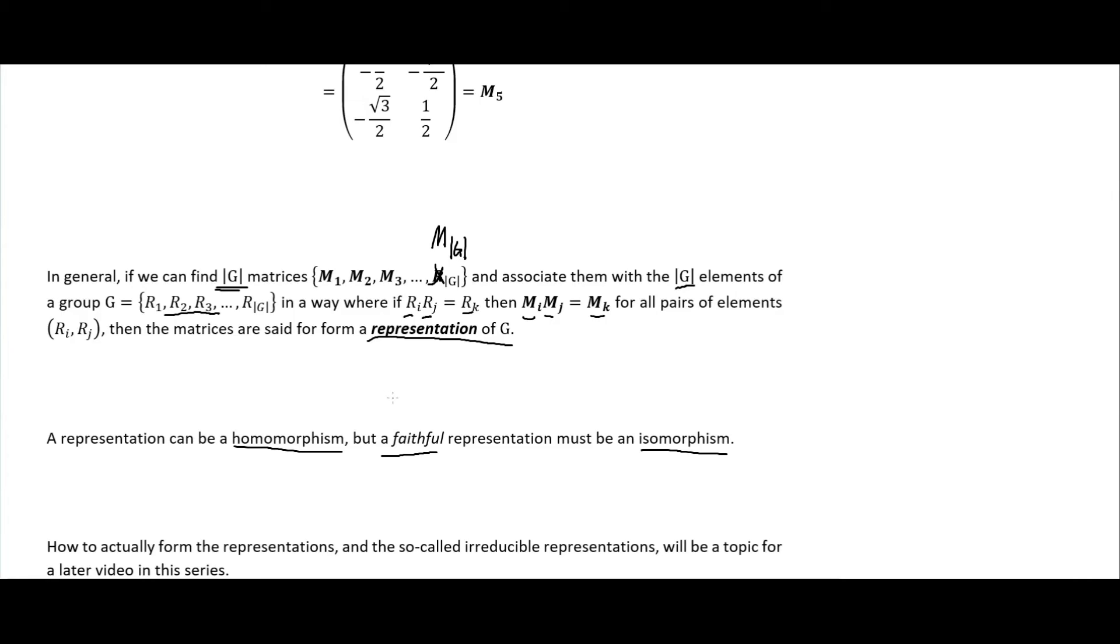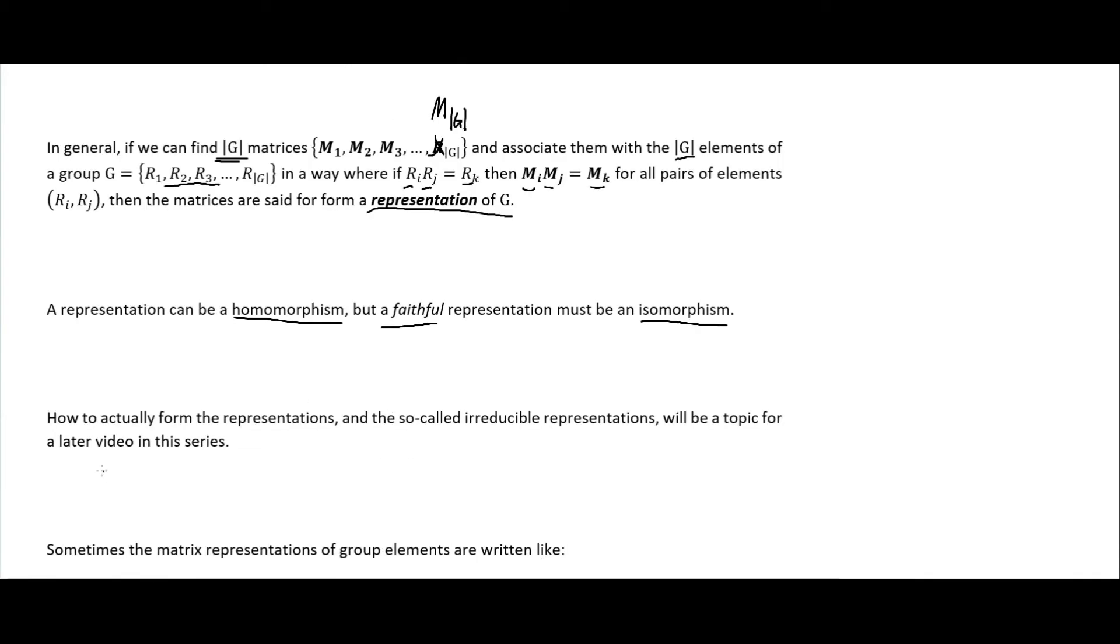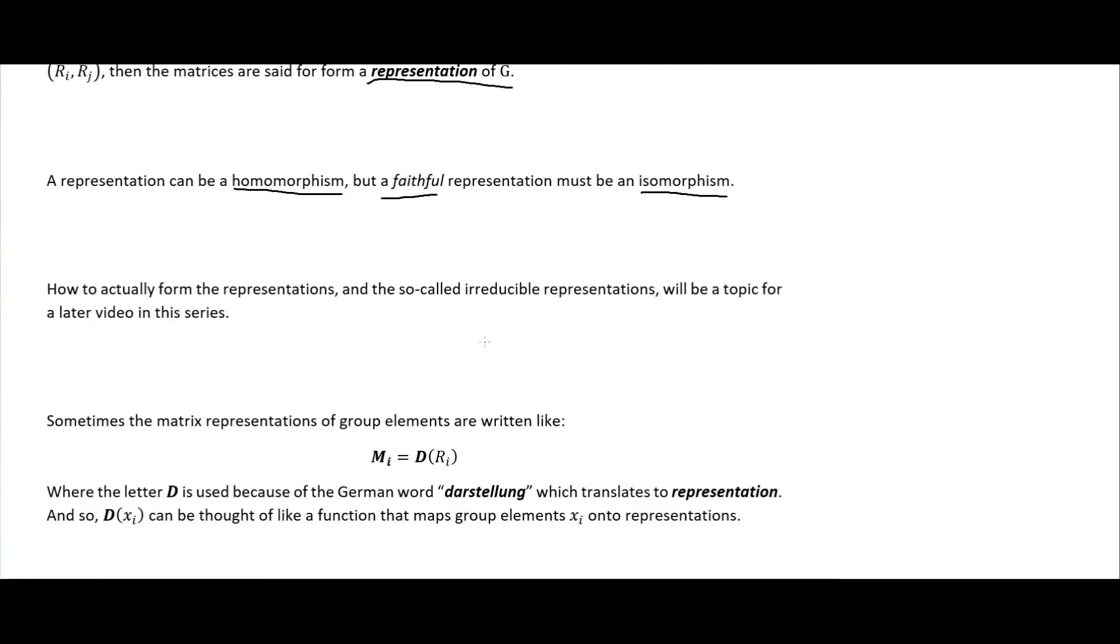How to actually form the representations and the so-called irreducible representations will be a topic for a later video. Sometimes you'll see the matrix representations of a group written like this, where we have this D here, and we're taking our group elements as the argument for this D function, where this function is mapping our group elements onto the matrices.